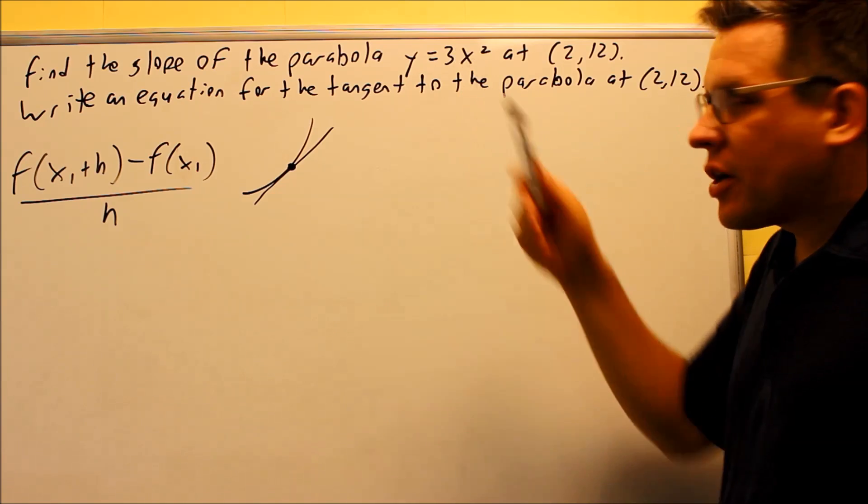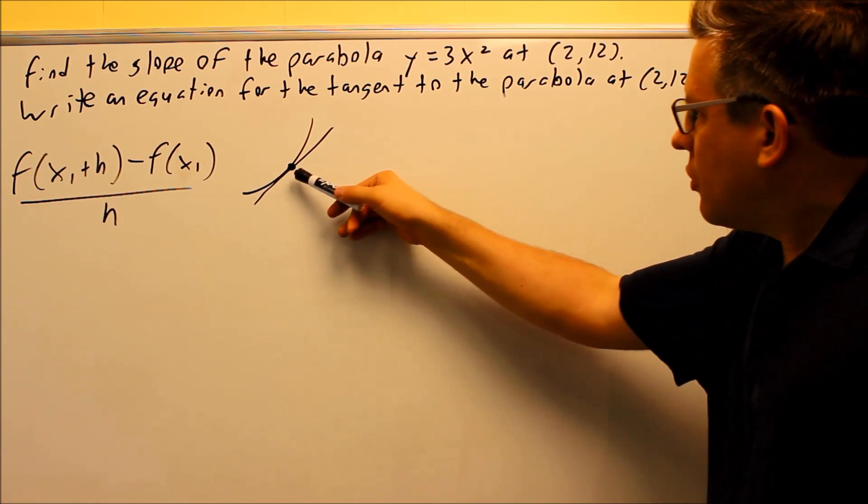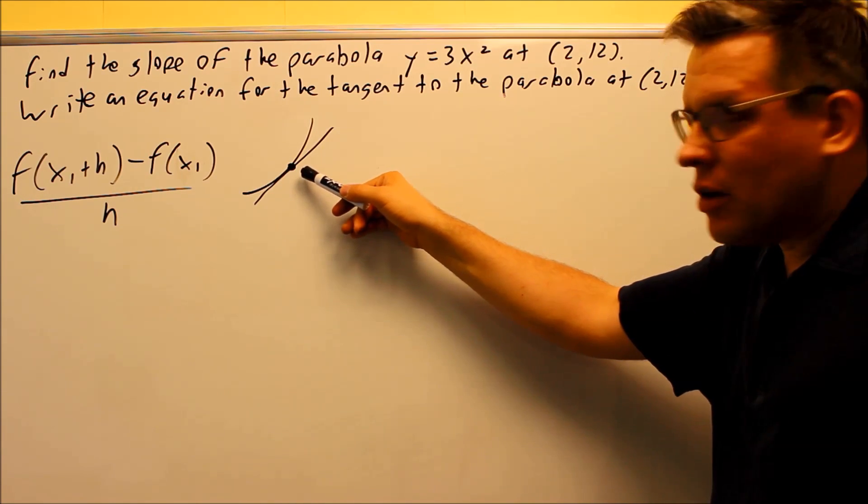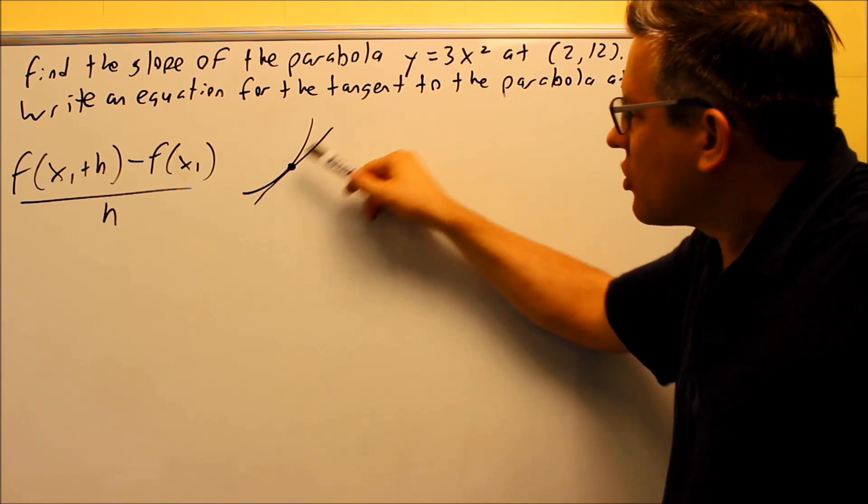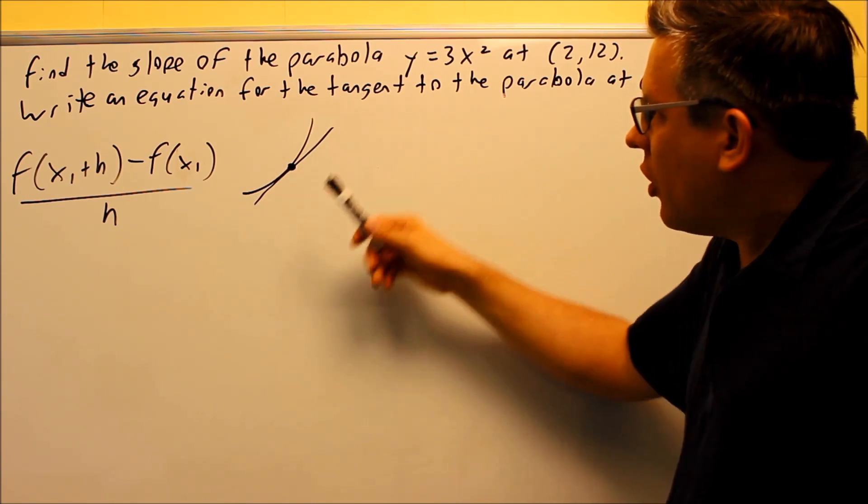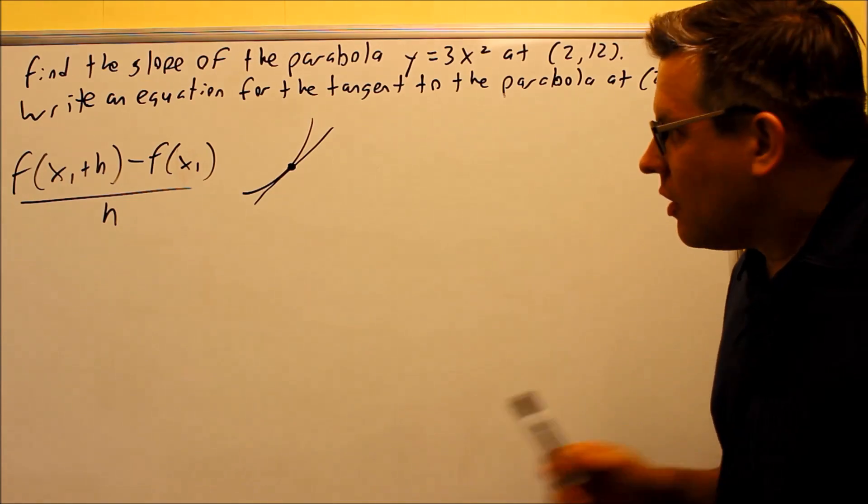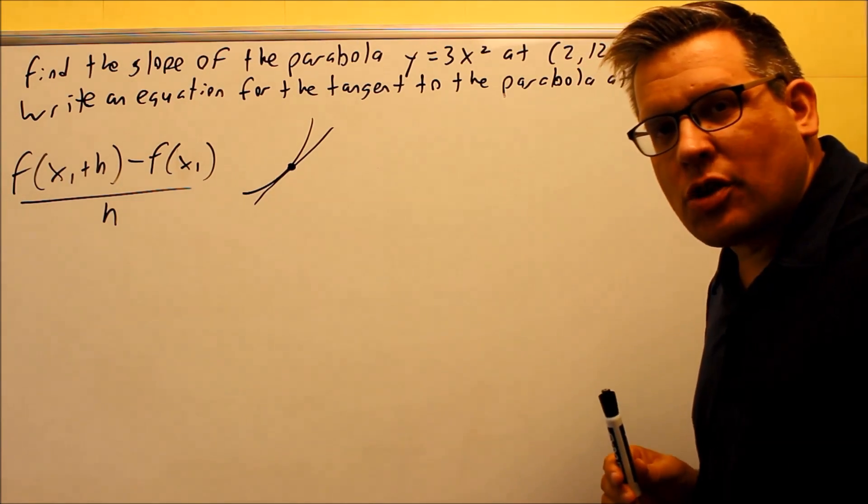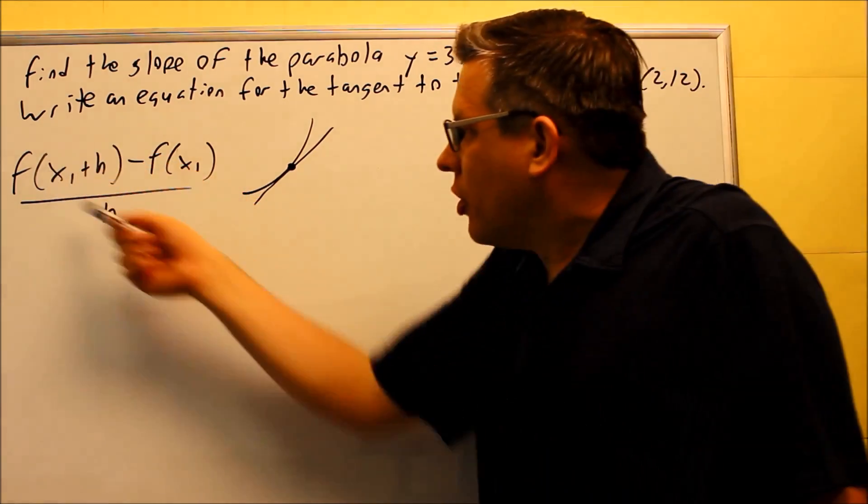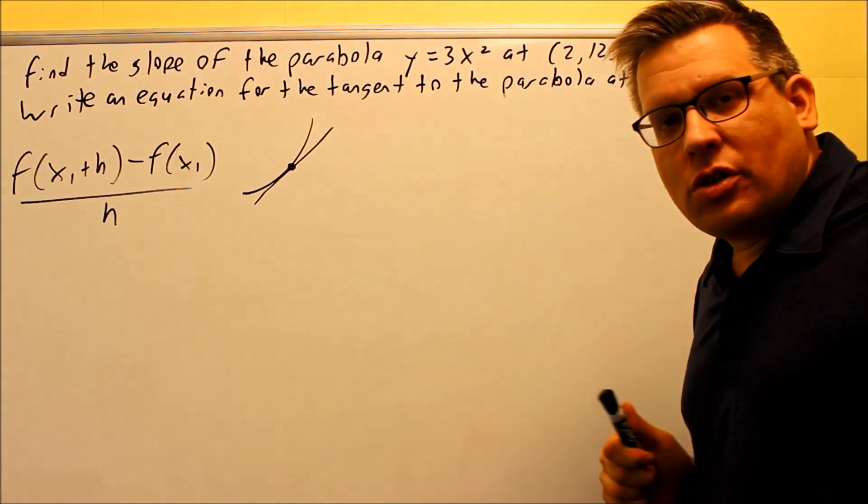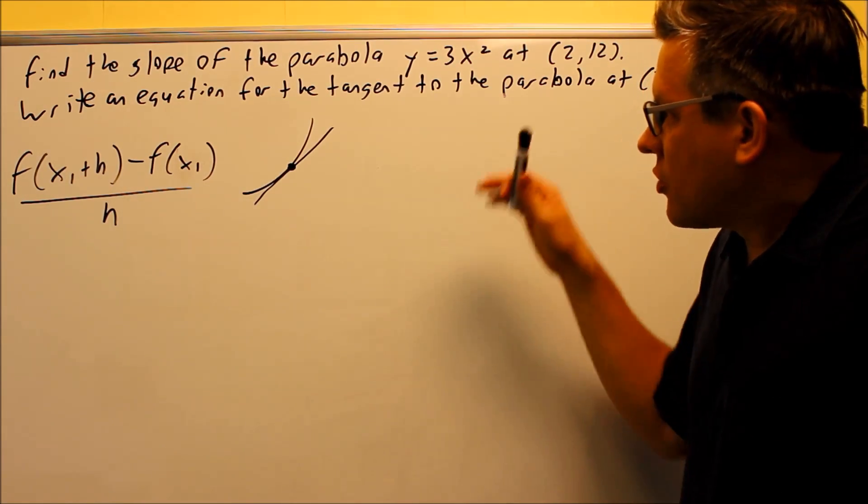So you can imagine this would be our parabola, 3x squared, and then the 2, 12 point would be right here. So I want to find the slope of that straight line first of all, and then I want to find the actual equation of that straight line. So that's visually what's happening on this particular problem. This formula is the one that we want to follow in order to get the equation and also the slope.